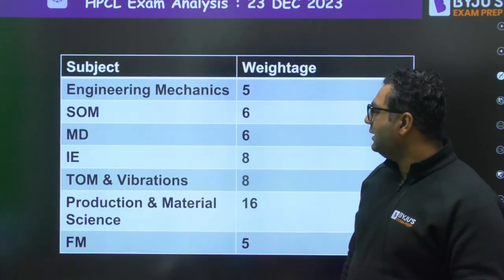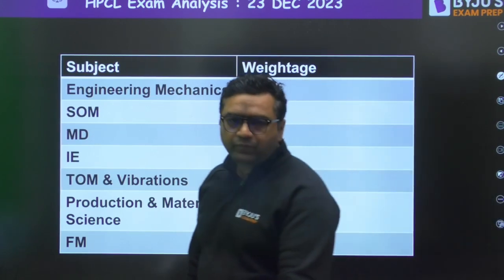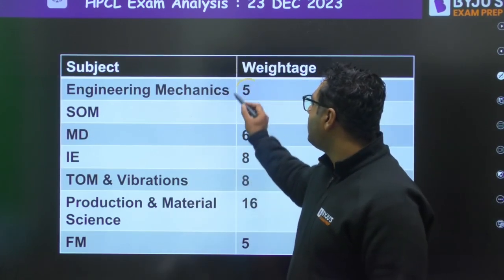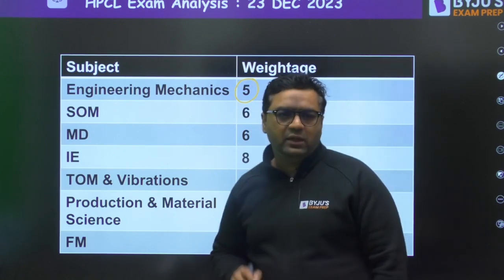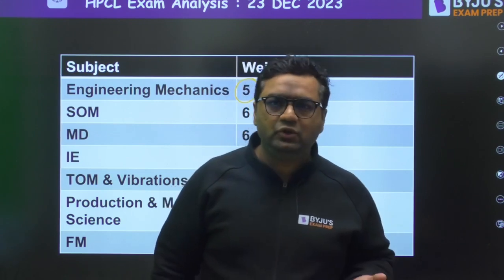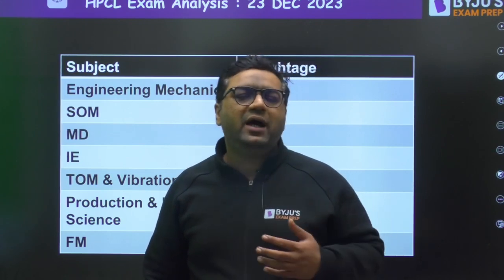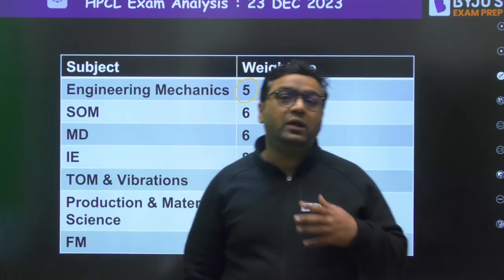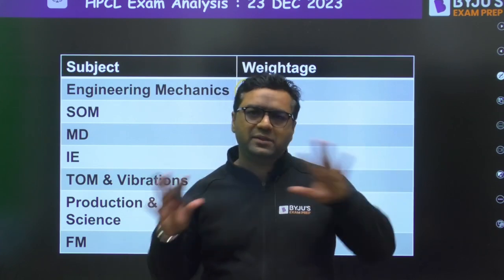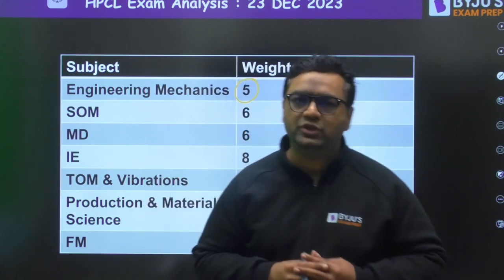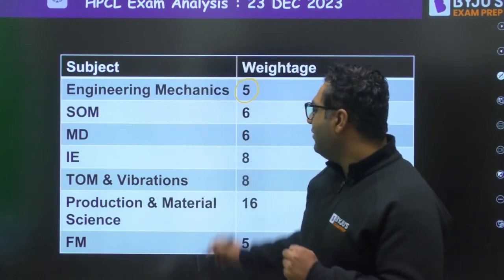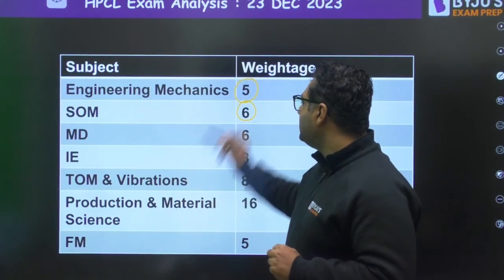Moving further — this is the table I have made for you. In Engineering Mechanics, the number of questions asked is 5, covering areas like Lagrangian mechanics and collision topics. One question is on screw jack. When talking about Strength of Materials, one question is from the stress-strain diagram, and one question is on the U-shaped beam under applied load.